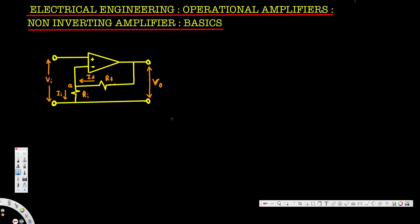What's going on guys? In this video we are going to see how to calculate the voltage output for a non-inverting op amplifier. Here we have a non-inverting op amplifier. This is non-inverting because the voltage input is connected to the non-inverting terminal — the positive terminal. Since the voltage input is connected to the positive terminal, this is a non-inverting op amplifier.